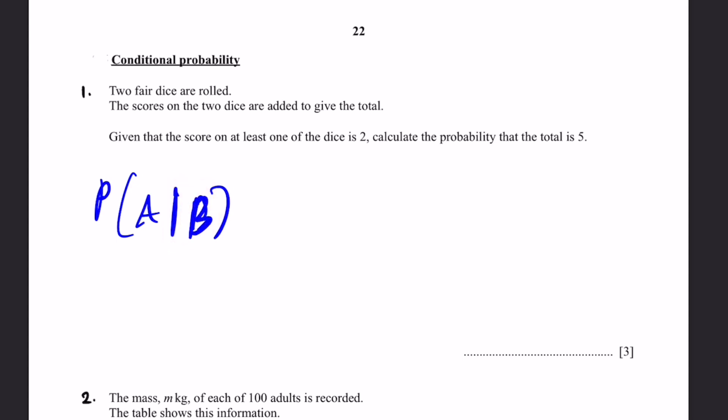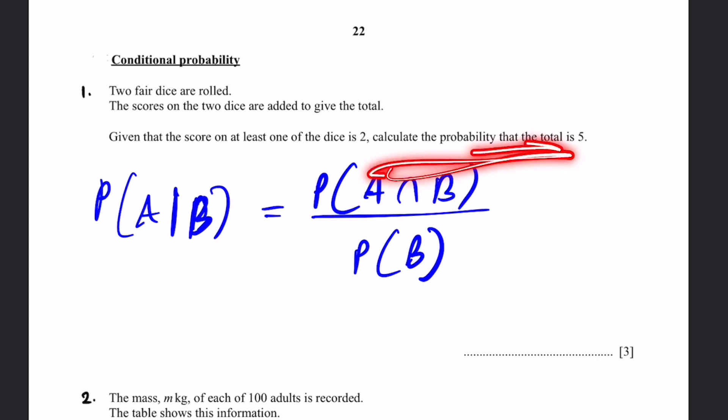So that'll be equal to probability of A intersection B divided by probability of B. So in this case, what are the A and B events? So the question asks, calculate the probability that the total is 5. This is the A event.